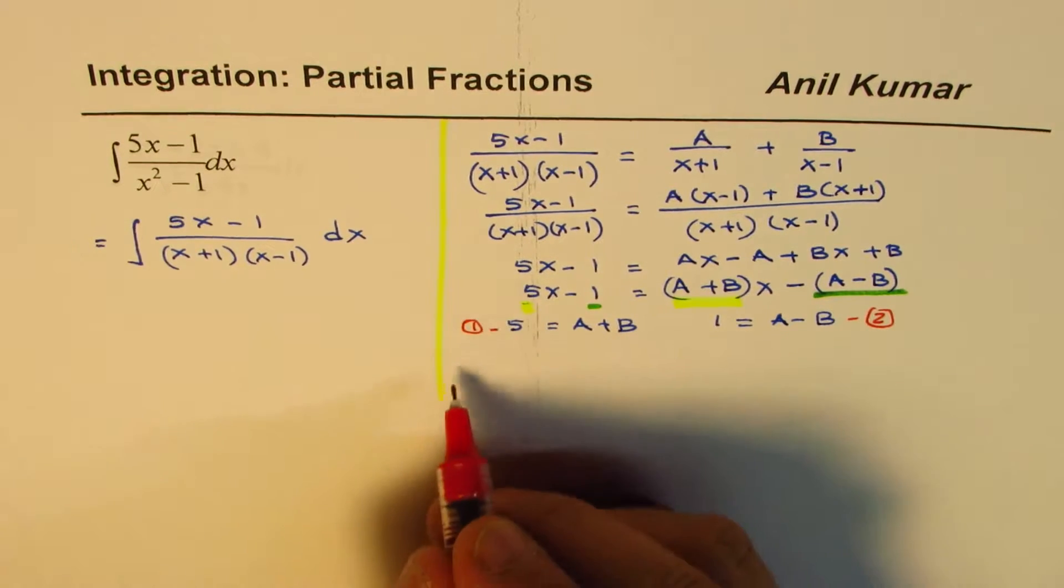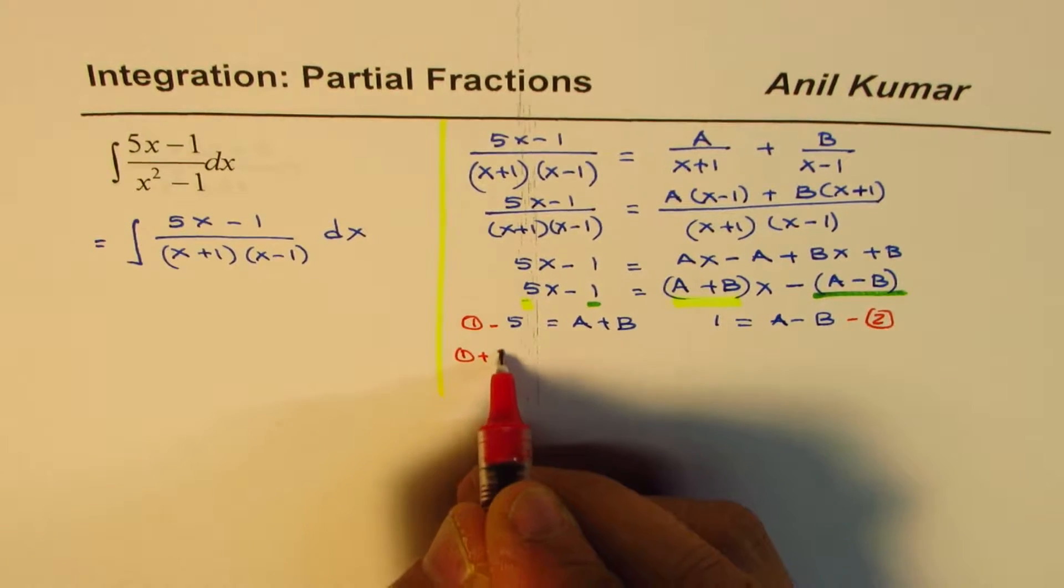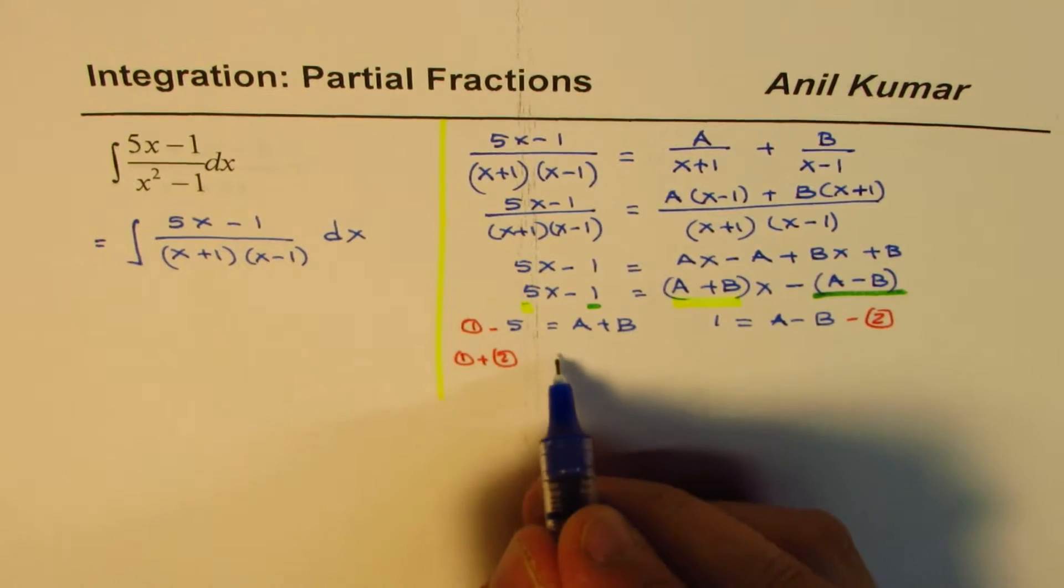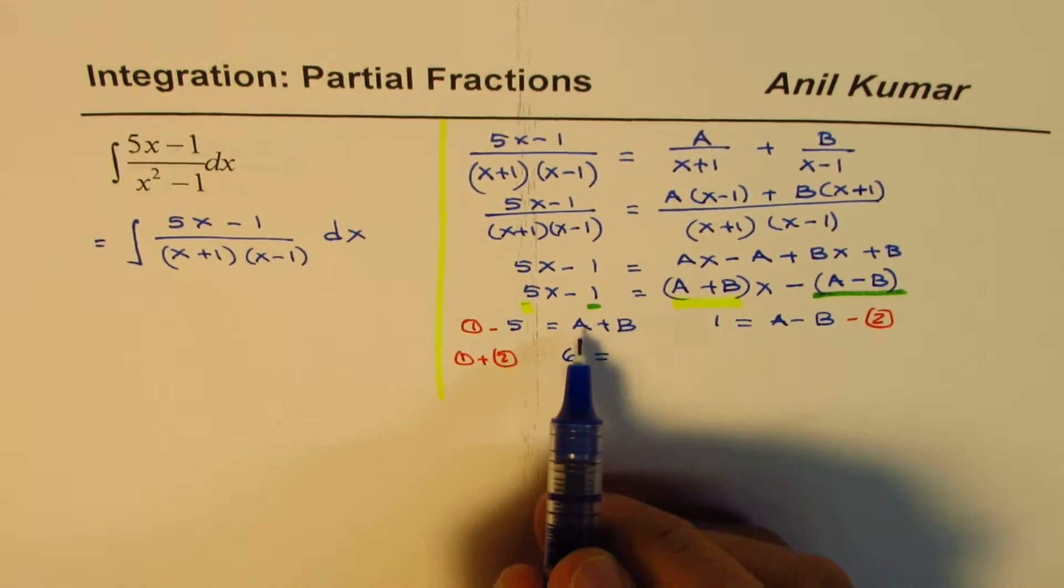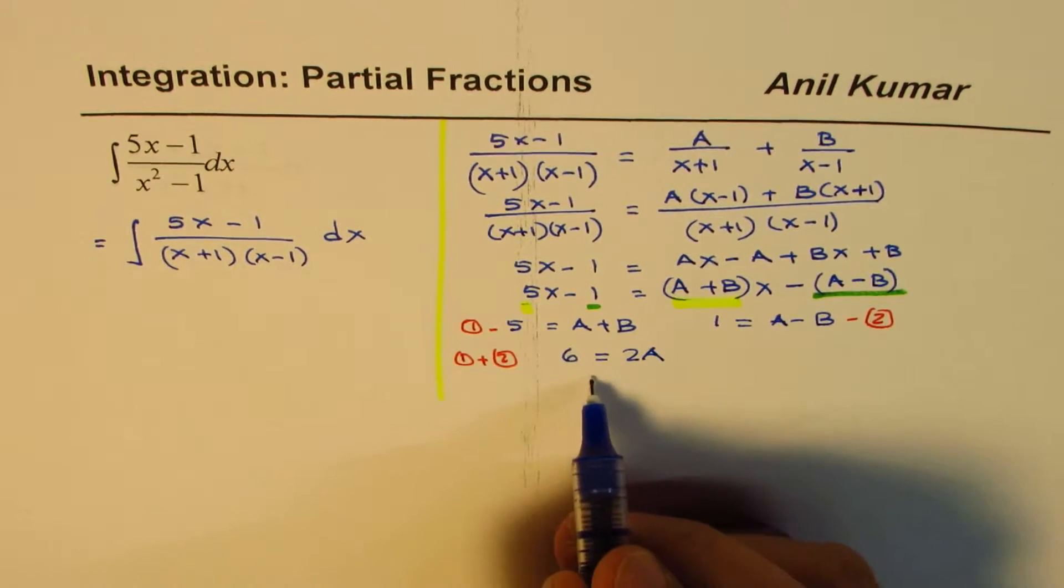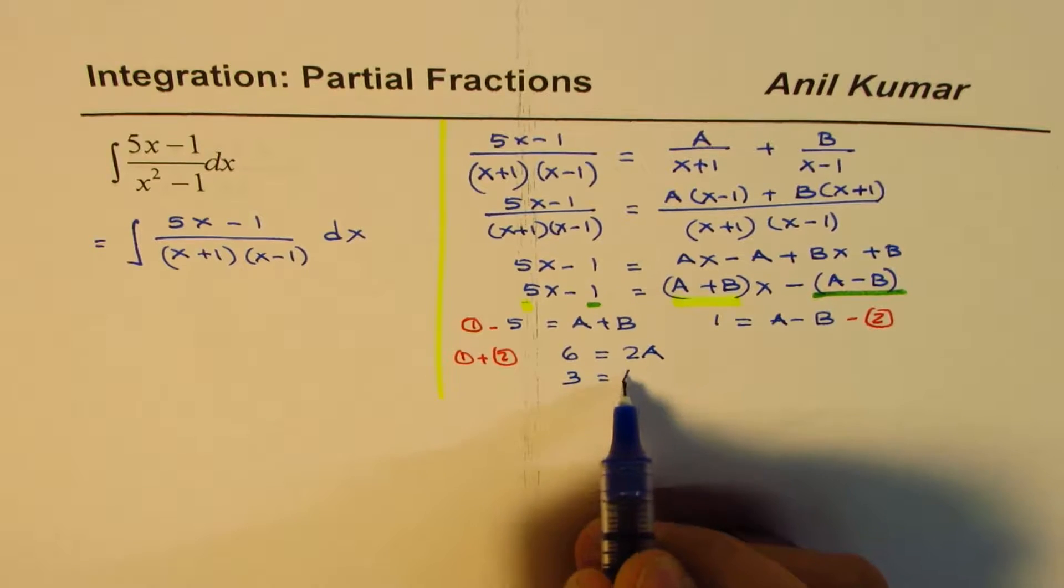Now, if I add these two equations, that is to say, equation 1 plus equation 2, if you add them, what do you get? 5 plus 1 is 6, you get 6 equals to A plus A is 2A. So that means 3 is equals to A.